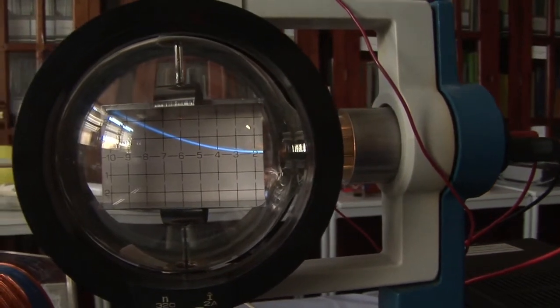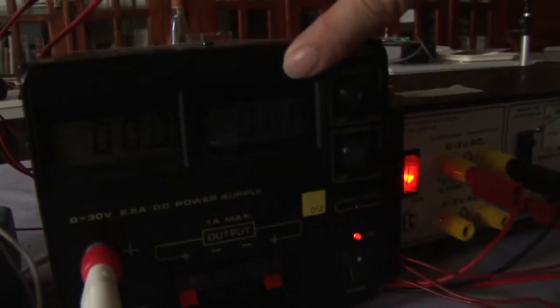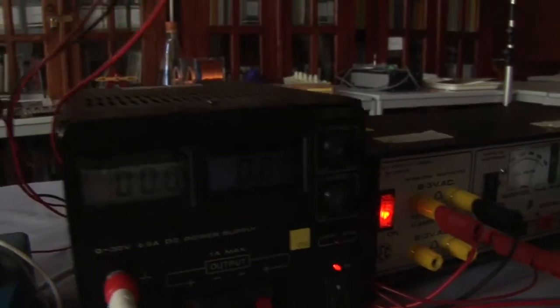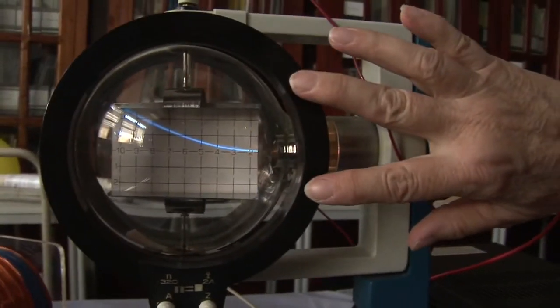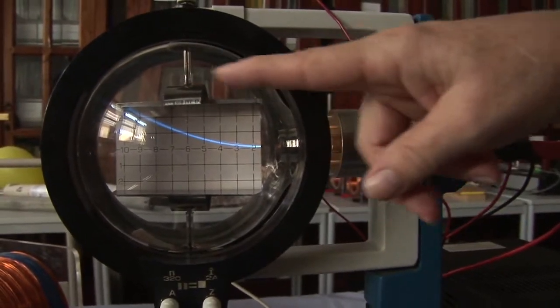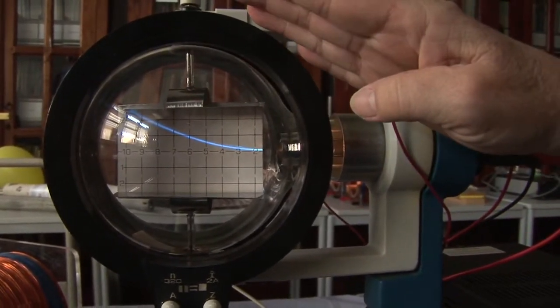So, the magnetic field is now off and the effect of the electrostatic field, the plate at the top of the screen, is pulling the electrons upwards.